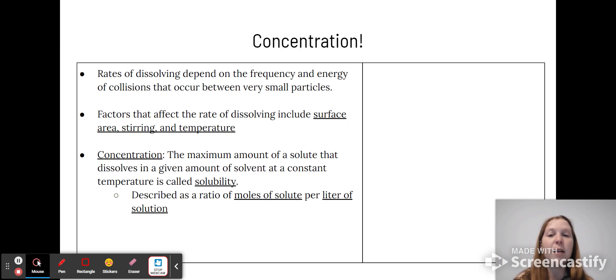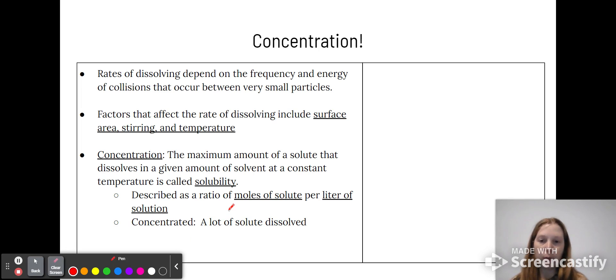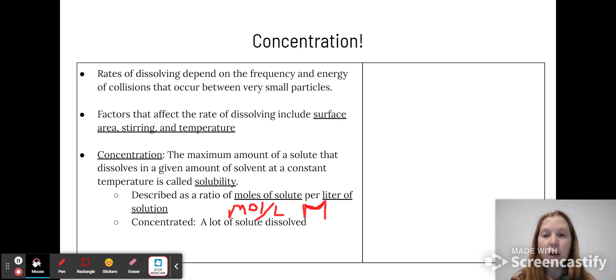Concentration is described as a ratio of moles of solute per liter of solution. This is also known as molarity - moles per liter or a capital M. Concentrated means a lot of solute is dissolved, and dilute means only a little bit of solute is dissolved.